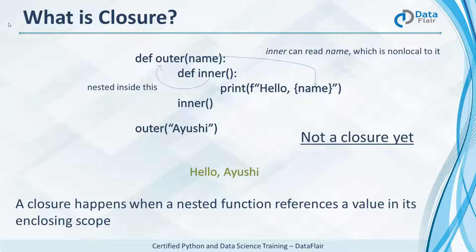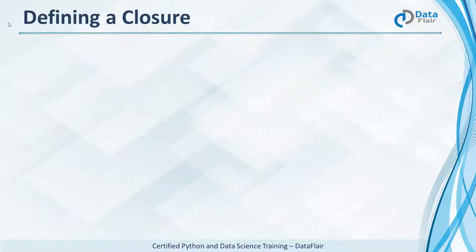But wait, this is not a closure yet. So then what is a closure? This function has an outer and an inner function. The inner function prints a value and the outer function returns this inner function. Now func is outer of 7 and it prints 7.